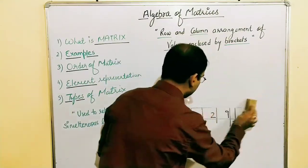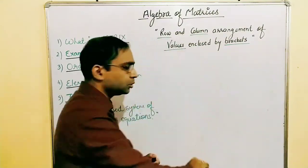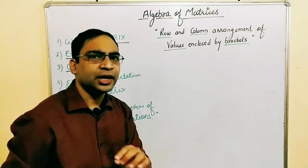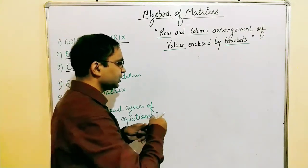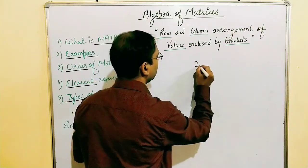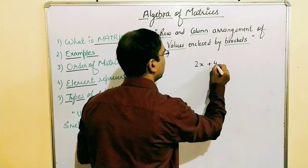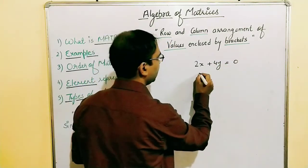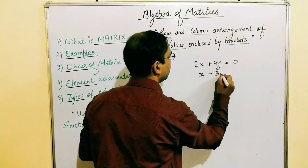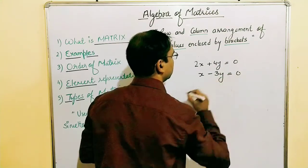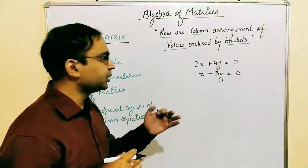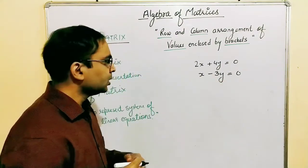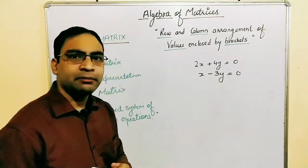As I have already told you, the matrix is used to represent a system of simultaneous linear equations. Let's say we have: 2x + 4y = 0 (equation 1), and x − 3y = 0. So we have two equations — a system of linear equations with two equations and two variables — and this can be represented in matrices.